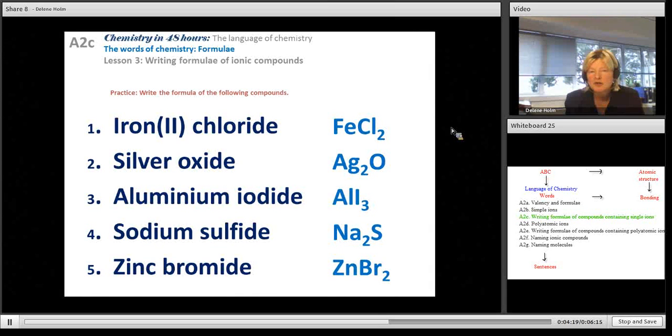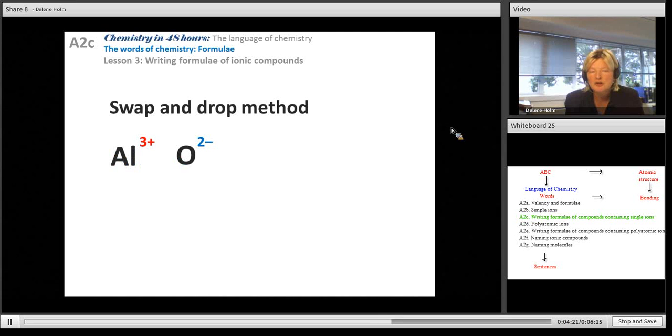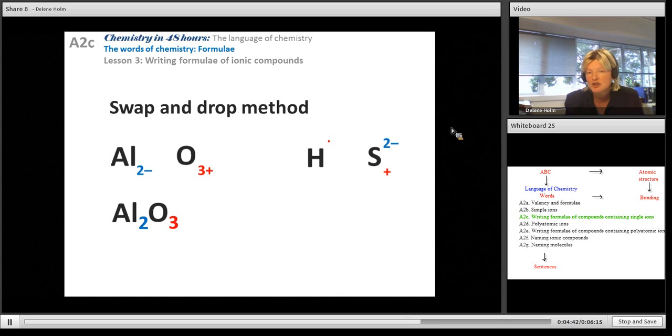You don't want to draw these balancing charges and sums, so we can use the swap and drop method. Take the charge and drop it down to the other one, and we'll have Al2O3. That is my formula. The same thing with hydrogen sulfide. Hydrogen group one, a charge of one, drops down to sulfur. The sulfide's charge goes down to hydrogen, giving me a formula of H2S. Again, we never write the one.